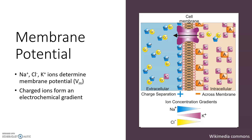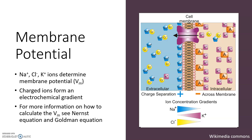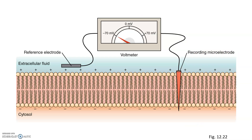It turns out that we can measure and even calculate how all these ion gradients interact, which gives us the membrane potential. If you want to know more, take a look at the Nernst equation and the Goldman equation. The membrane potential is measured in millivolts, a unit of measurement you've probably heard of in other contexts.